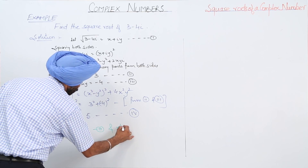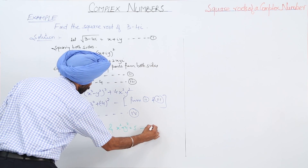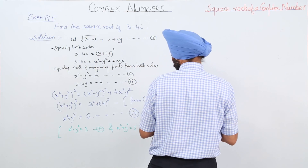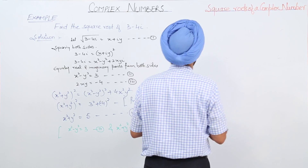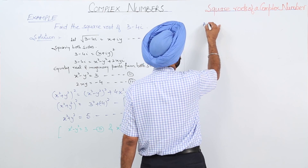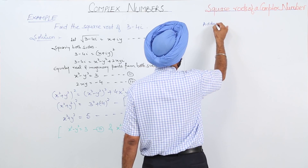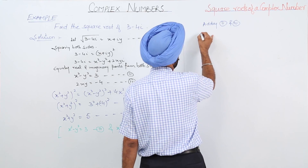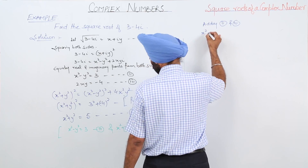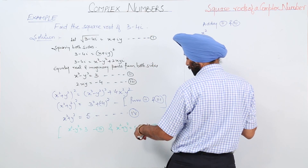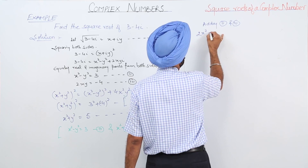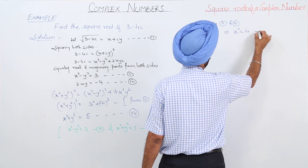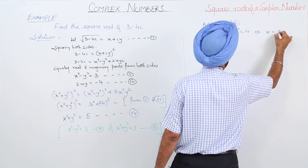x squared plus y squared is equal to 5, equation 4. Adding equations 2 and 4, we get 2x squared is equal to 8, so x squared is equal to 4, and x is equal to plus or minus 2.